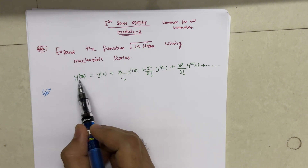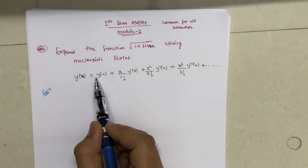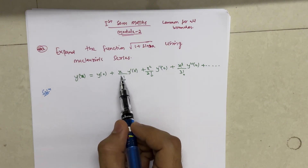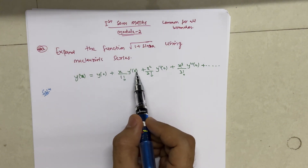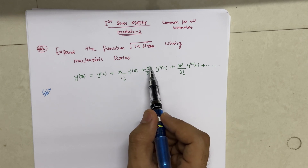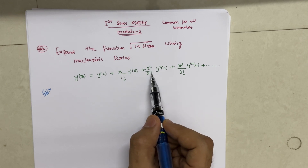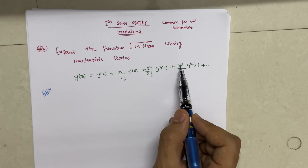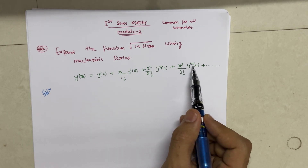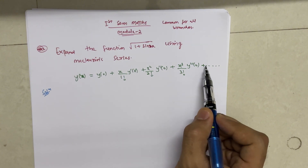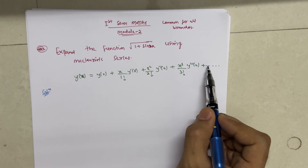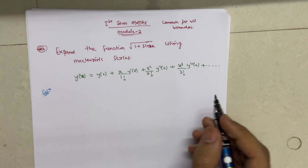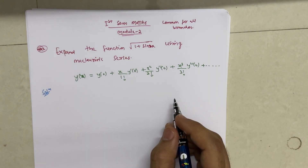The Maclaurin series is: y(x) = y(0) + x divided by 1 factorial times y'(0) + x squared divided by 2 factorial times y''(0) + x cubed divided by 3 factorial times y'''(0), and so on with x raised to power 4 divided by 4 factorial, and it will proceed similarly.